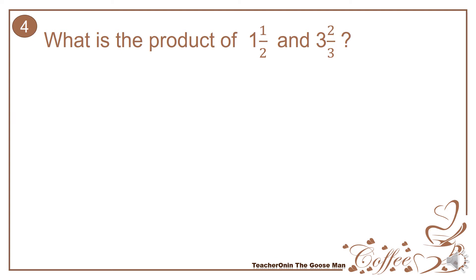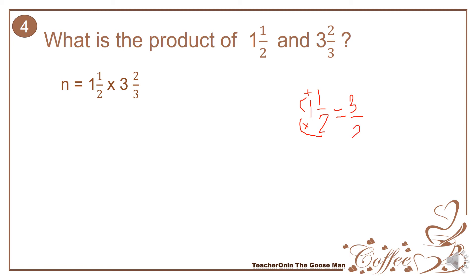Let's find the product of a mixed number by another mixed number. For instance, what is the product of 1 and 1 half and 3 and 2 thirds? I'll write the equation: 1½ times 3⅔. Before multiplying, I'll convert all mixed numbers to improper fractions. For 1½: 2 times 1 plus 1 equals 3 over 2. For 3⅔: 3 times 3 equals 9 plus 2 equals 11 over 3.